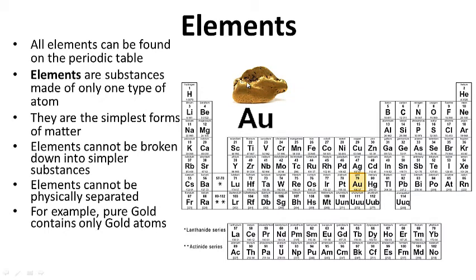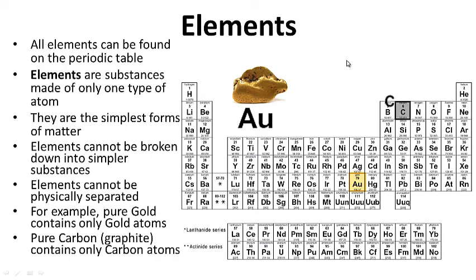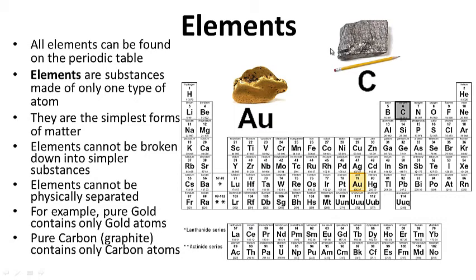It's still gold no matter how hot you get it, no matter how hard you try to break it up — it's always going to be gold. Same with carbon, or graphite. Carbon cannot be physically separated into simpler substances. No matter how hot it gets or how many times you try to break it up or smash it, it's still going to be carbon atoms no matter what.